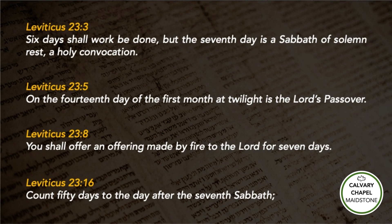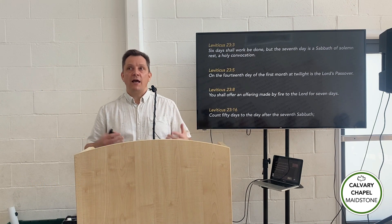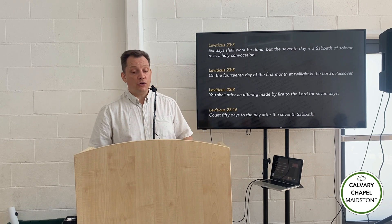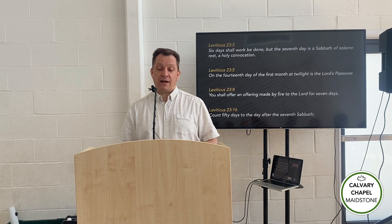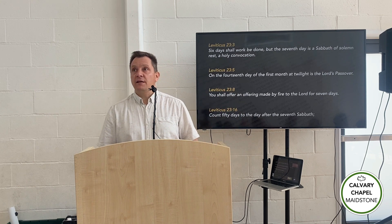In Leviticus it talks about how on the 14th day of the first month at twilight is the Lord's Passover. So we've got a date set in place using numbers to help the Israelites observe their feasts. Sets of lengths of time for the feasts calculated using numbers — you shall offer an offering made by fire to the Lord for seven days. The Lord commanded that sacrifices were made and they needed to be able to count to know when and for how long to offer sacrifices. So numbers were embedded into the mind of Israel, and the Lord even commanded his people to count.